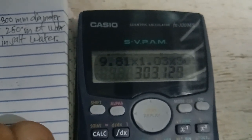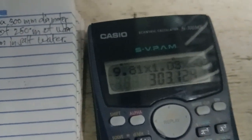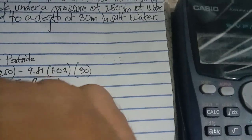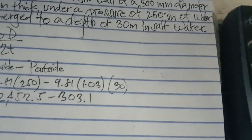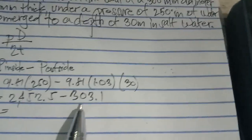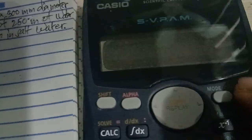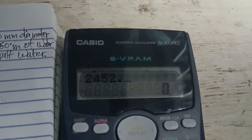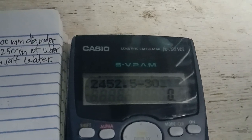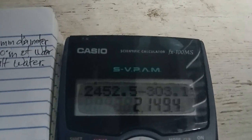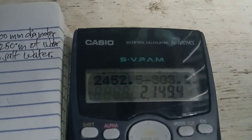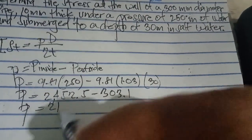P outside is 303.1 kPa. So P equals 2452.5 minus 303.1, which equals 2149.4 kPa.